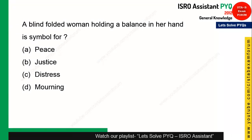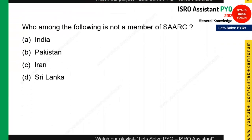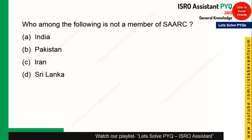The next question is from polity. As seen in courts, a blindfolded woman holding a balance in her hand is a symbol of justice. The balance indicates equality between the two parties, so justice is the correct answer.